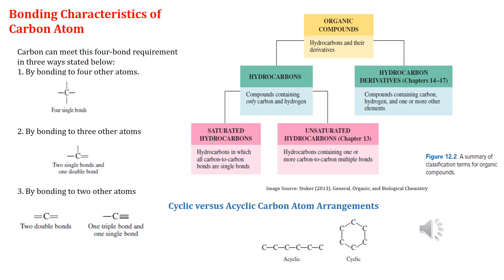Organic chemistry studies compounds containing carbon and hydrogen as well as its derivatives. Now let us learn why carbon forms six times as many compounds as all the other elements combined. One answer is that carbon atoms have the unique ability to bond to each other in a wide variety of ways that involves either long chains of carbon atoms or cyclic arrangements or rings, or sometimes even both chains and rings are present in the same molecule.